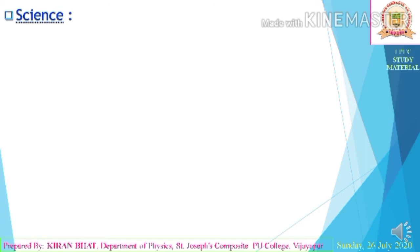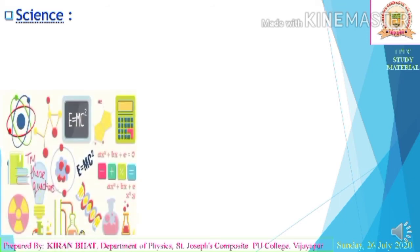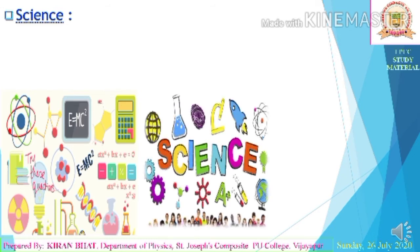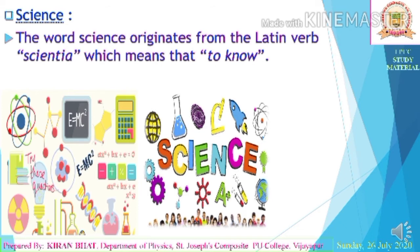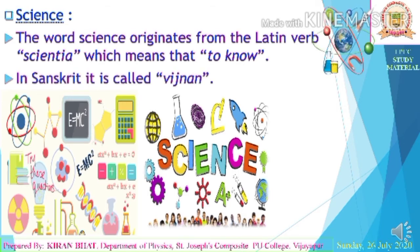Before discussing what physics is, let us look at science. Science includes theory, formulas, laws, and everything you see around us. The word 'science' originates from the Latin verb 'scientia,' which means 'to know.' In Sanskrit, we can call it 'vigyan.'